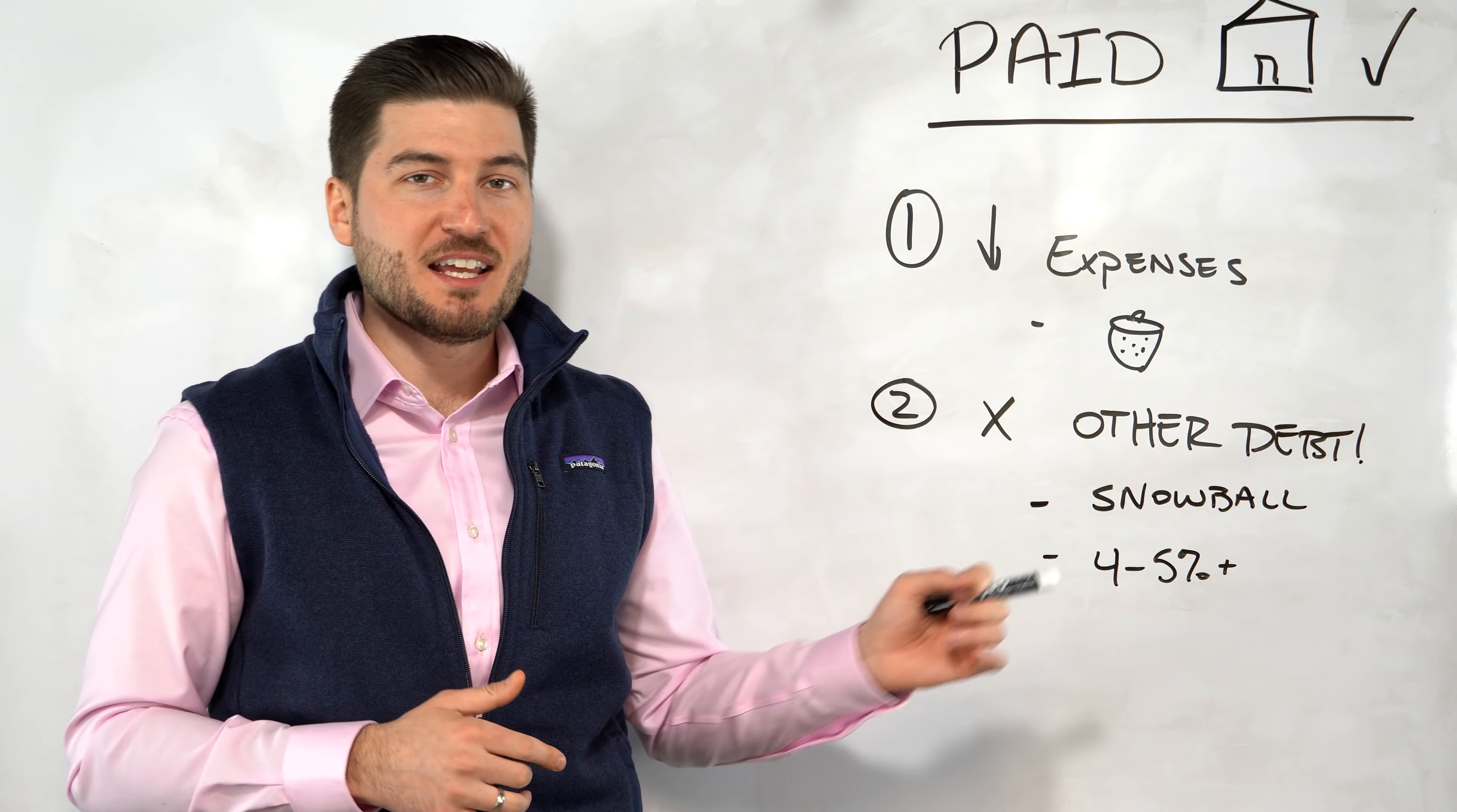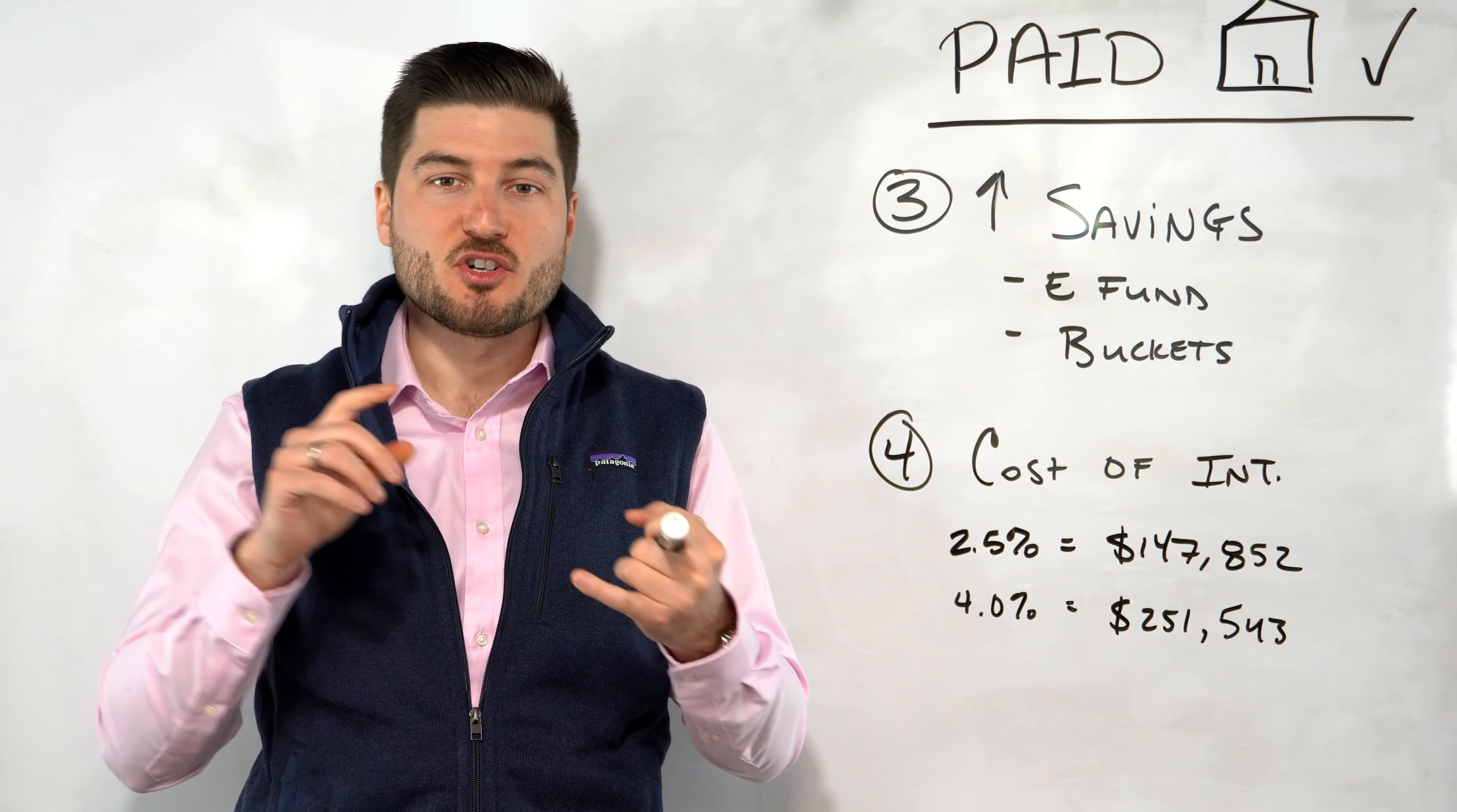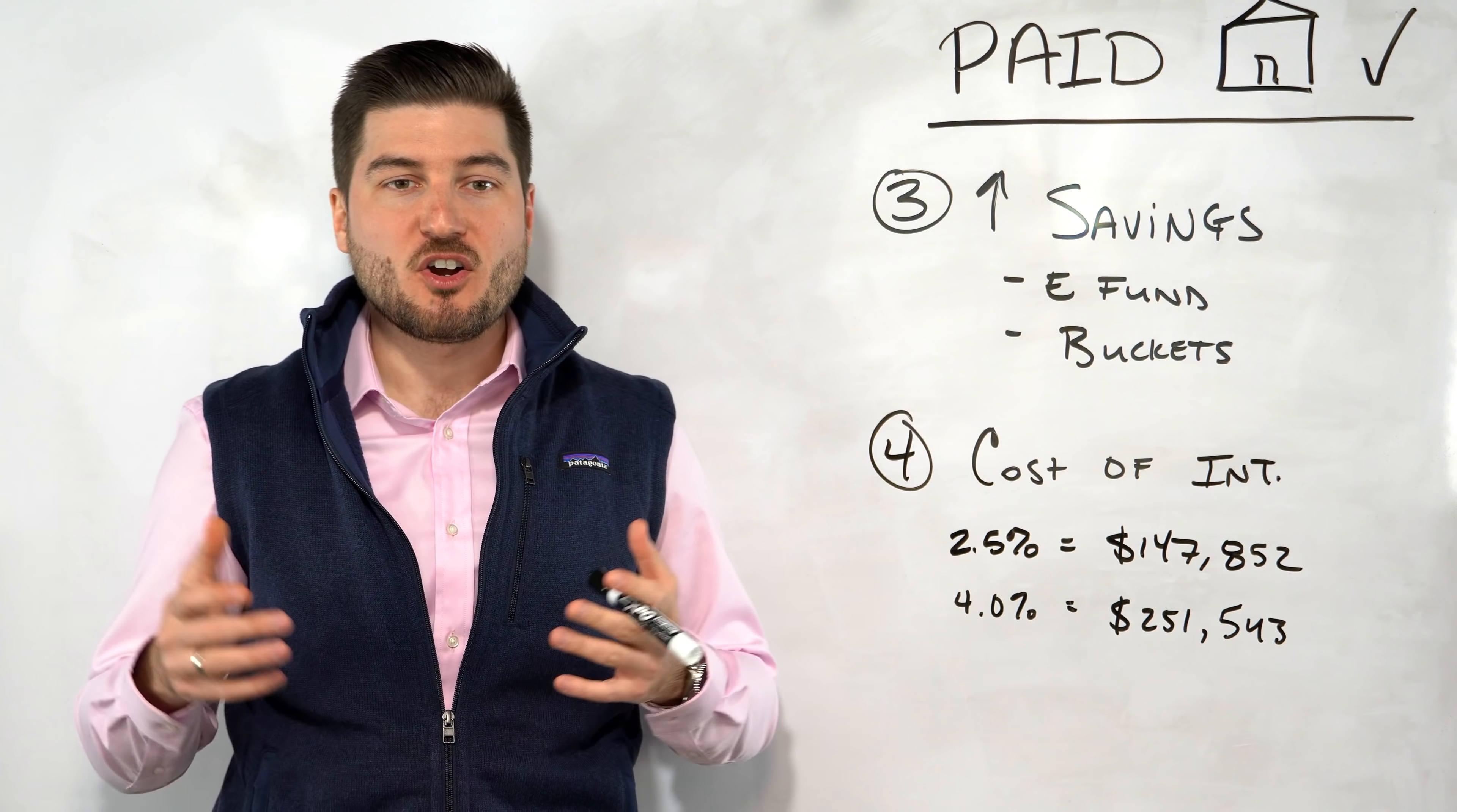So number three and four, continuing with a little bit of math, is number three is increasing your savings rate. So this will allow you to actually fill up your emergency fund very quickly if you didn't have one, which is super important in my opinion. And the second is that we talked about these buckets. So if you remember my previous video talking about how to save without a budget, these buckets, such as your travel, your car fund, your house maintenance fund, or any funds that you may have, you may be saving for a boat, for example, I don't know, whatever floats your boat, no pun intended, you can fill up these buckets much quicker because you don't have that monthly mortgage taking a chunk out of your monthly income.